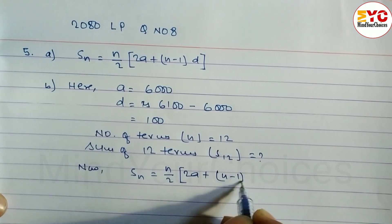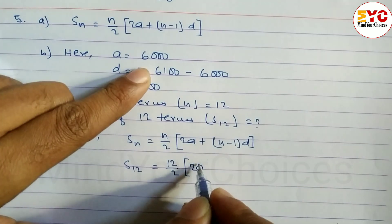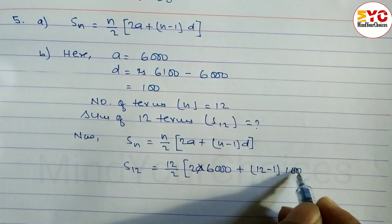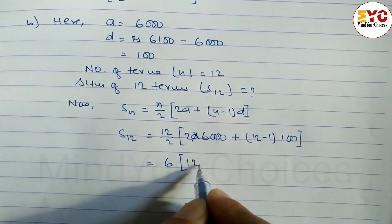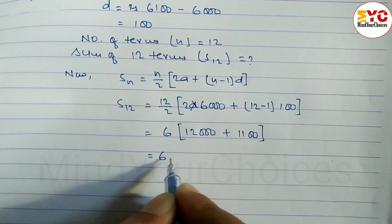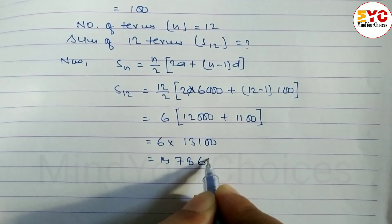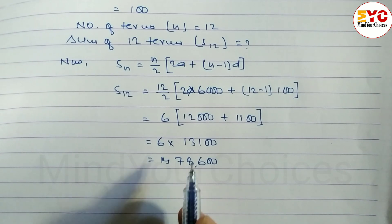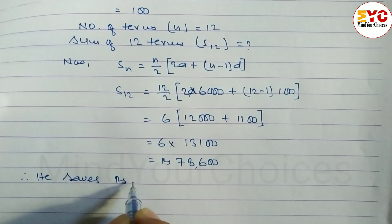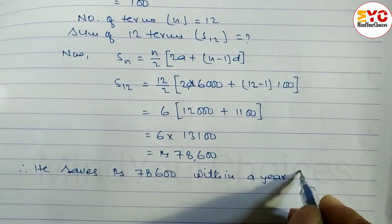Using the formula Sn = n/2 × (2a + (n−1)d), S12 = 12/2 × (2×6,000 + (12−1)×100) = 6 × (12,000 + 1,100) = 6 × 13,100 = 78,600. Therefore, he saves Rs. 78,600 within a year in the cooperative.